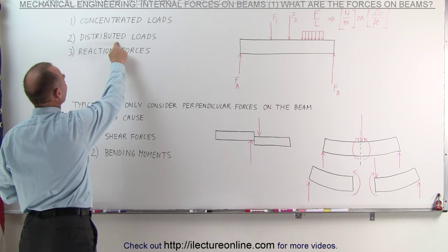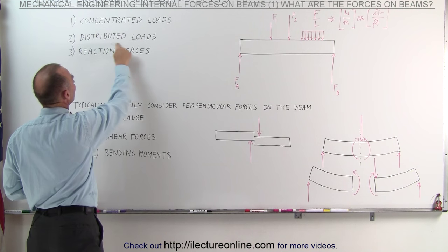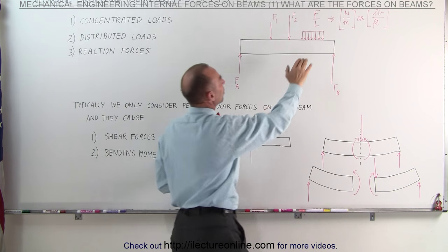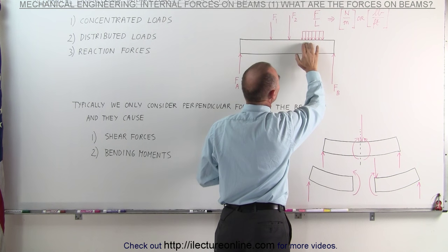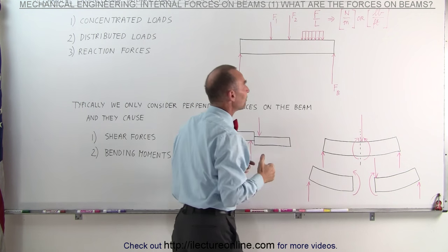The second kind of load or force that we can have that is applied to a beam is what we call a distributed load, where the force is distributed over a certain length of the beam. It can be the entire length of the beam or it can be a section of the length of the beam.